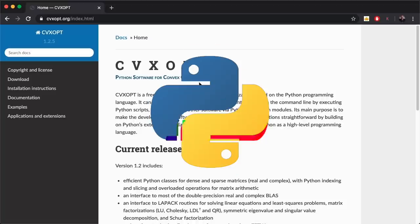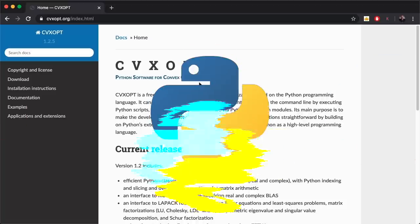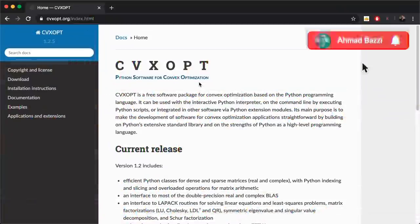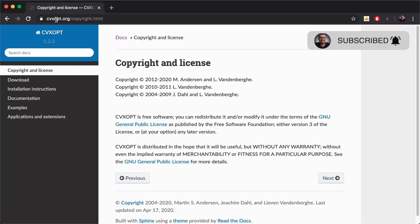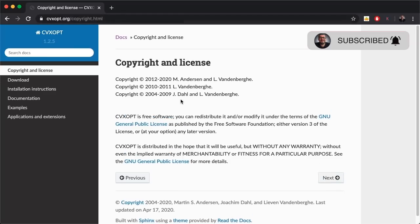To check out the website, it's cvxopt.org. The contributors of this package are mainly Martin Anderson, Joachim Dale, and Lieven Vandenberghe. Lieven Vandenberghe is one of the co-authors along with Stephen Boyd of the book entitled Convex Optimization.